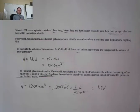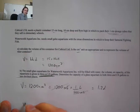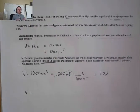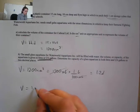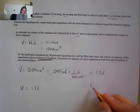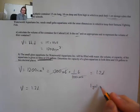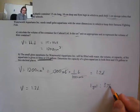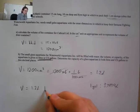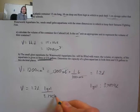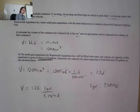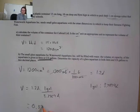Now I want to convert to gallons. We know 1.2 liters, and from the formula sheet, 1 US gallon is equivalent to 3.7854 liters. So I multiply 1.2 liters by (1 gallon / 3.7854 liters) — the liters cancel off — giving approximately 0.32 gallons.